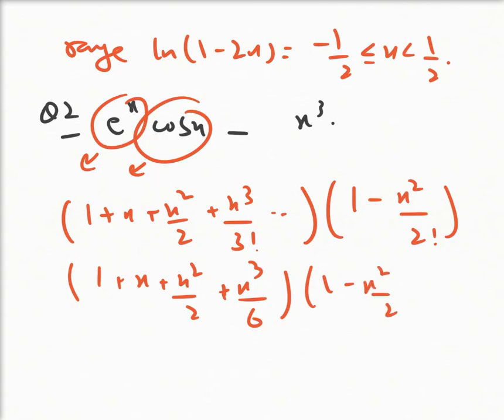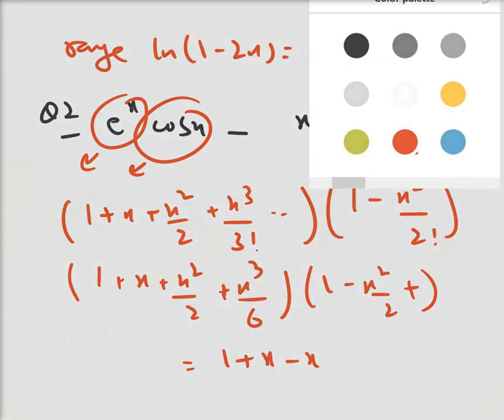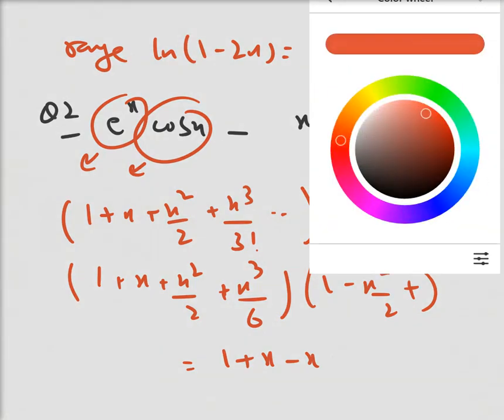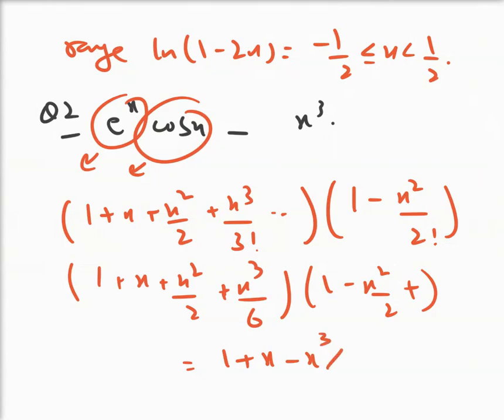After multiplying, we get 1 + x - x²/2 - x³/3.